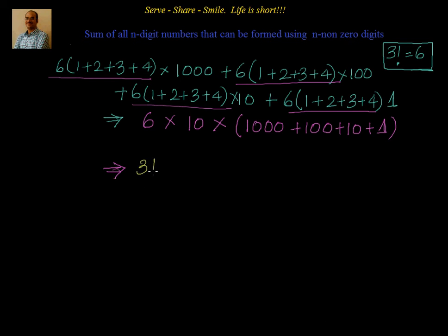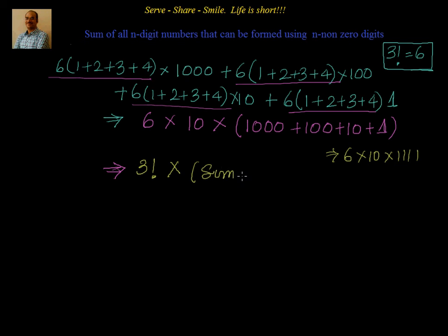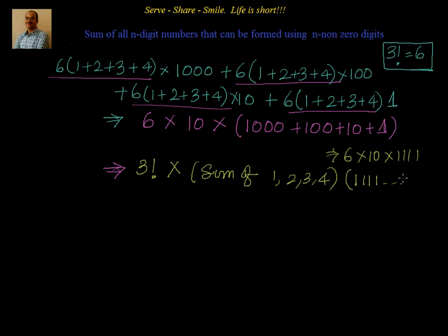So this is the sum of all the digits across all the numbers. We just added the place values — first the 1000s, then 100s, then 10s, then the units. This is nothing but 6 into (1 plus 2 plus 3 plus 4), which I can factor out as common, into (1000 plus 100 plus 10 plus 1). That equals 6 into 10 into 1111. So that will be your answer. That 6 is factorial 3.